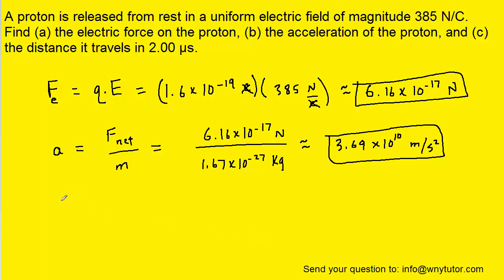And then for part C, to calculate the distance that it travels, we can refer back to an old kinematics formula. Now, the proton was released from rest, so of course that means the initial speed of the proton was zero. That's going to knock out this term right here. So this equation really just simplifies to one-half multiplied by the acceleration multiplied by the time squared.